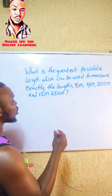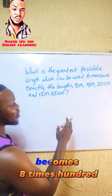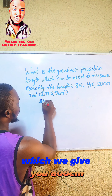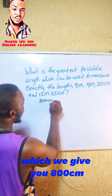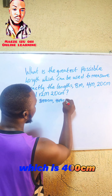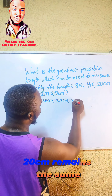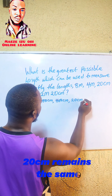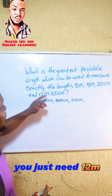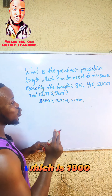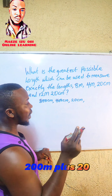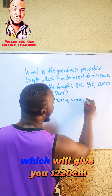8 meters converted to centimeters: 8 times 100 gives you 800 centimeters. The second one, 4 meters times 100 gives 400 centimeters. 20 centimeters remains the same. For 12 meters, 12 times 100 is 1200, plus 20 gives you 1220 centimeters.